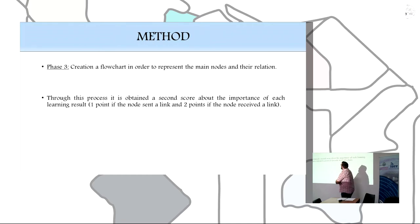In phase 3, we create a flow chart in order to represent the main nodes and their relation. Through this process, it is obtaining a second score about the importance of each learning result: 1 point if the node sends a link and 2 points if the node receives a link.